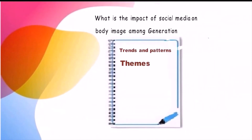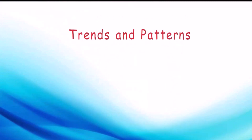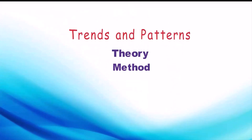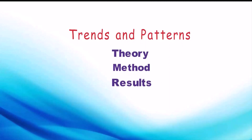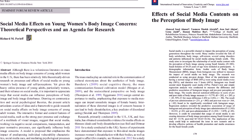Here are five things you should look out for and take notes on in your sources. Number one: trends and patterns — specifically theory, method, or results. Are there clusters of studies that focus on the same aspect of the topic and use the same methods? Do certain approaches become more or less popular over time?